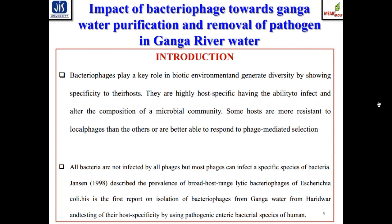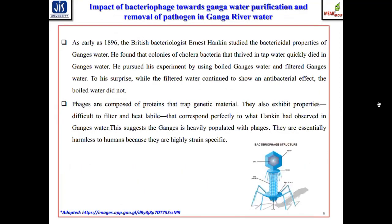Jensen was the first to report the isolation of bacteriophages from Ganga water at Haridwar and to test their host specificity using pathogenic enteric bacterial species of human beings. As early as 1896, British bacteriologist Hankin studied the antibacterial property of Ganga water. He was surprised to find that cholera bacteria thriving in tap water quickly died in the Ganga water. He pursued experiments using both boiled and filtered Ganga water, and found that while filtered water continued to show an antibacterial effect, the boiled water did not — a clear indication that a biotic factor in Ganga water was killing bacteria.